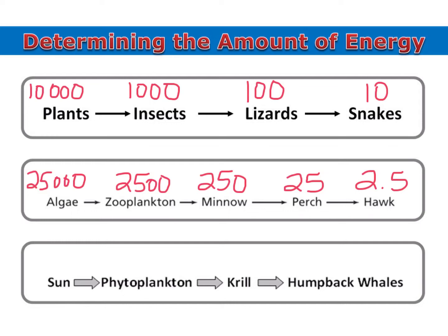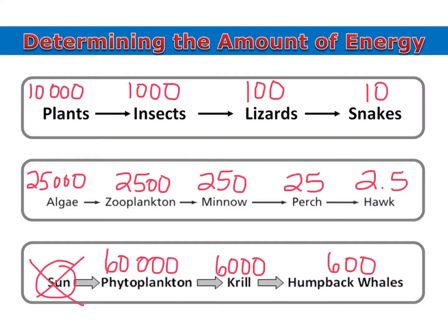Finally, let's say that they told us there were 60,000 kilocalories in the phytoplankton population. Remember, the sun is not a source of chemical energy. So that would mean there were 6,000 kilocalories in the krill and 600 in the humpback whale population. You basically do it exactly the same way as percentages — you just move the decimal over on the amount of energy they give you instead of a percentage.